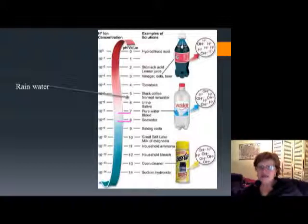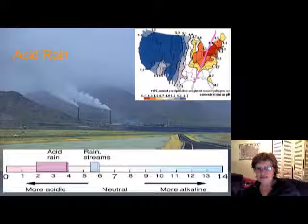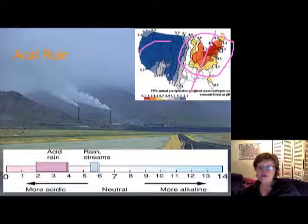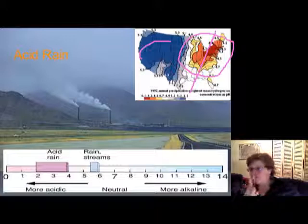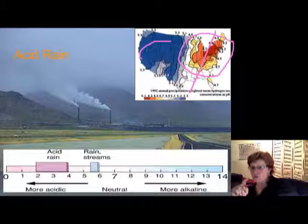This slide shows the distribution of acid rain across the US. Because of all the coal-burning power plants in the Appalachian region, that area experiences much more acid rain than the other half of the United States. Hopefully filters in the chimneys of coal-burning power plants have improved things, but we have to think about how we make electricity.